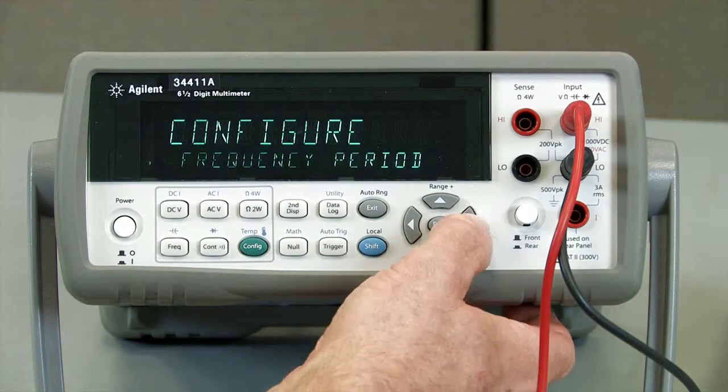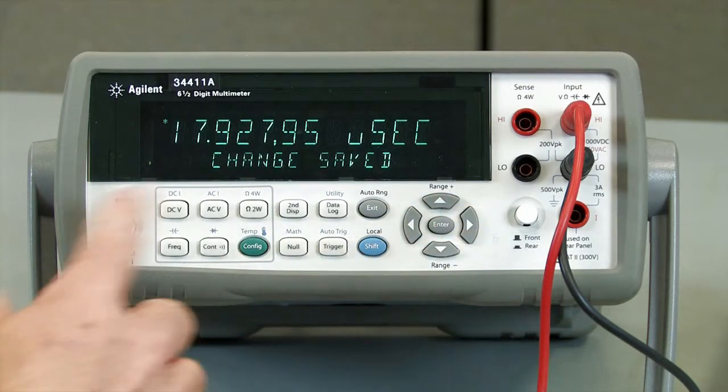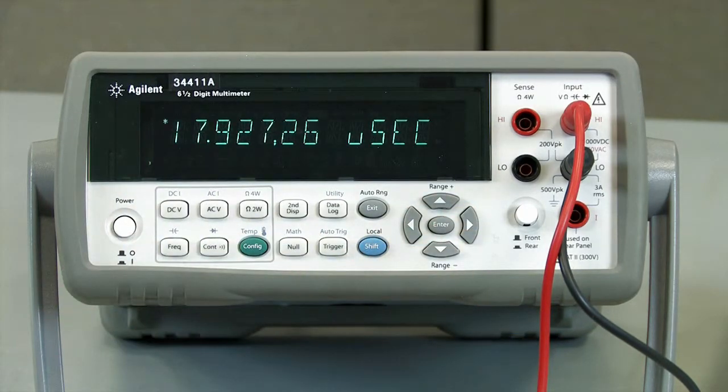And if we look at the period, it's 17.9 microseconds. So if we can integrate over that period or a multiple of that period, then we can really reject the noise.